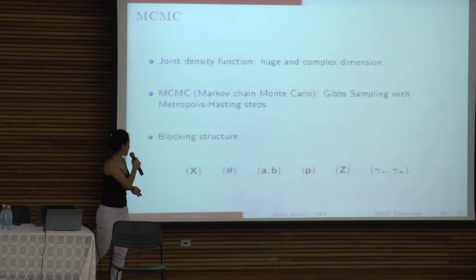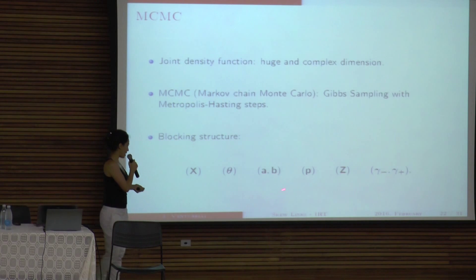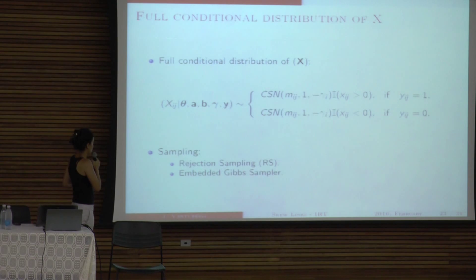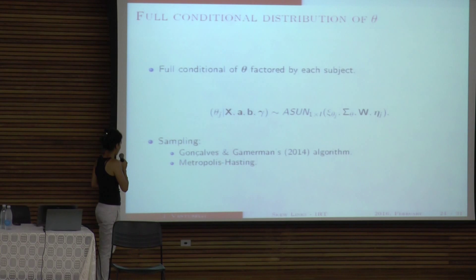Of course, the joint density function is huge and complex. It depends on how many students I have, and that could be thousands of students. So the dimension is just huge. So we use a MCMC, Gibbs sampling with Metropolis Hastings steps. And this is the blocking structure that we use. So A and B, the discrimination power and difficulty of the item, they're closely related to each other. So we sample them together. This is the full conditional distribution of X. And again, it always depends on the value of gamma. Here it's the full conditional of the ability, which has a very weird distribution. So the dimensions here depends on the number of items that we have.